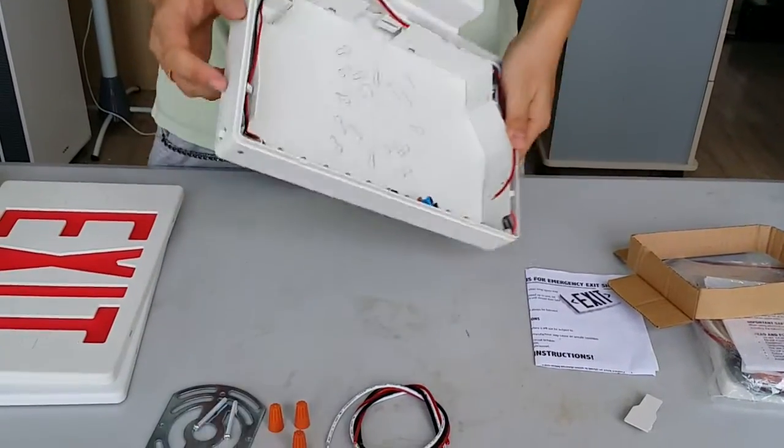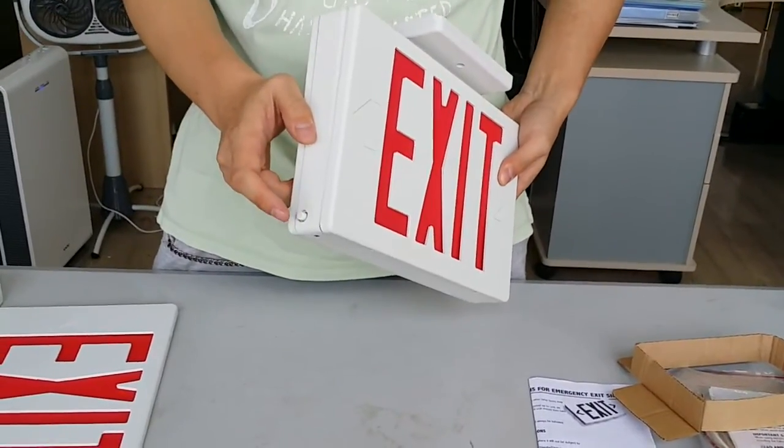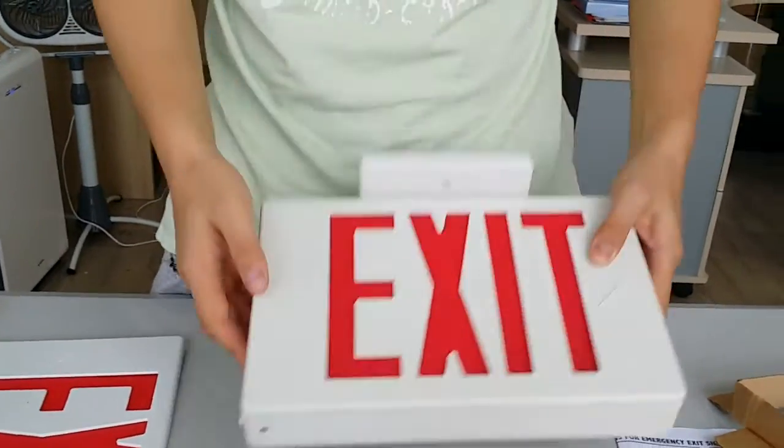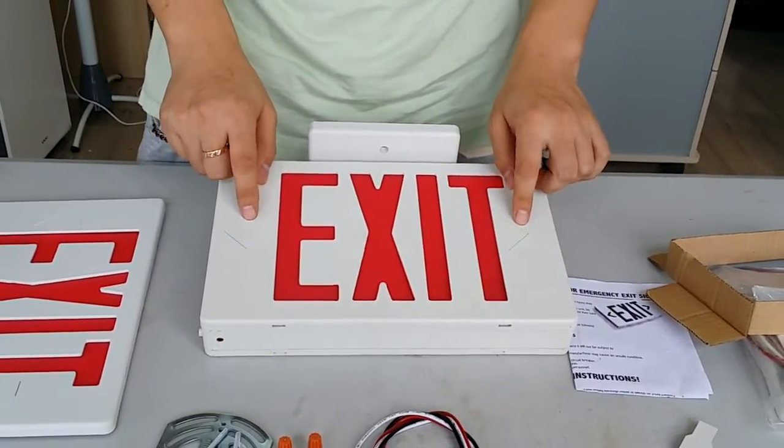And there's a test button on the light for checking the battery situation. Two arrows on the panel are removable.